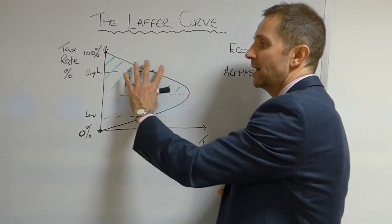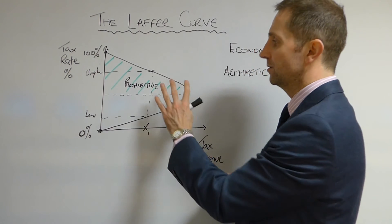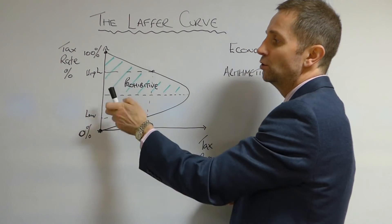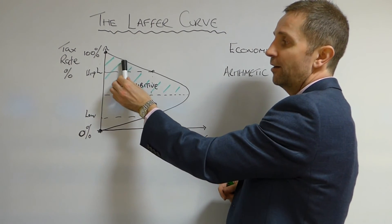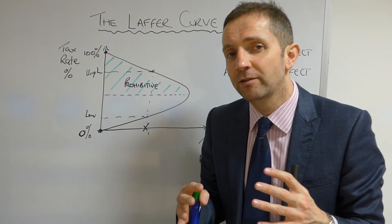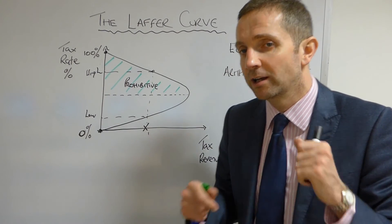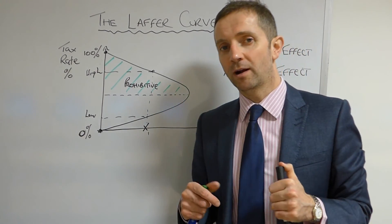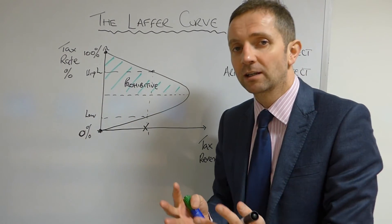Flip that over to the other side in terms of the arithmetic effect up here. So the arithmetic effect is that as you then start to increase your tax rates higher, ever higher and higher, then your tax revenue is starting to decline. And why is that? That is because of the economic effect whereby your tax base is shrinking because of the disincentive effects to work.